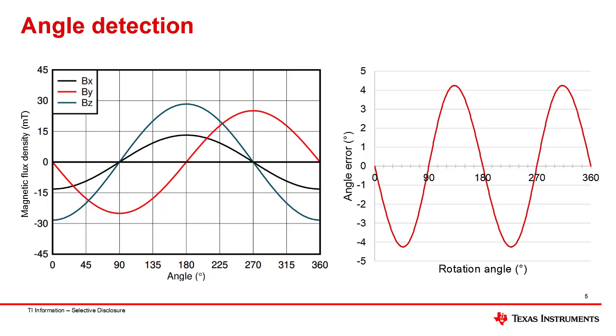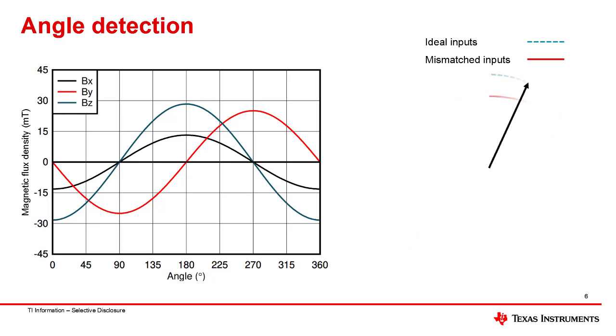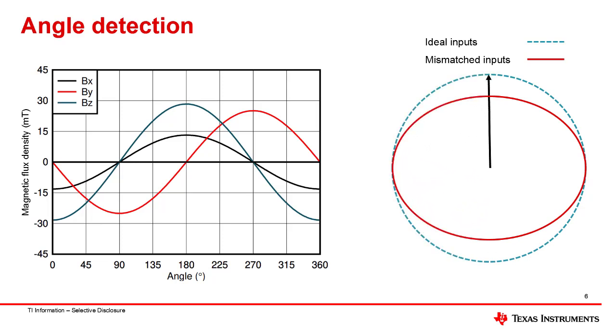Regardless of the source of mismatch, when assigning inputs with unequal amplitudes to the arc tangent function, the end result is effectively using an elliptical input to describe a circular motion. Observing this example rotation, the ellipse will both lead and lag the circle over the course of one full rotation. The angle error is zero at each 90 degree interval, but can be quite large in between.